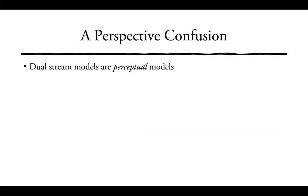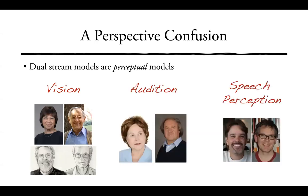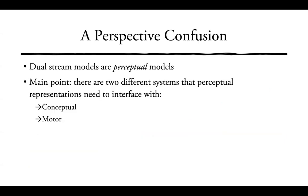The idea of getting rid of the dual stream model is, I think, a perspective confusion. It's important to keep in mind that dual stream models are fundamentally perceptual models. The main point is that there are two different systems that perceptual representations need to interface with: conceptual representations on one hand, and motor systems on the other. This seems incontrovertible.